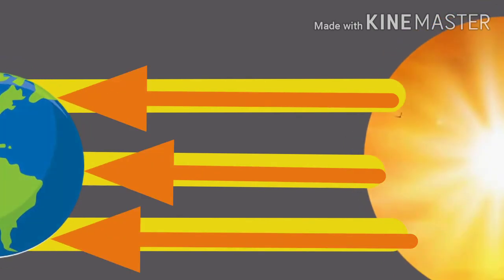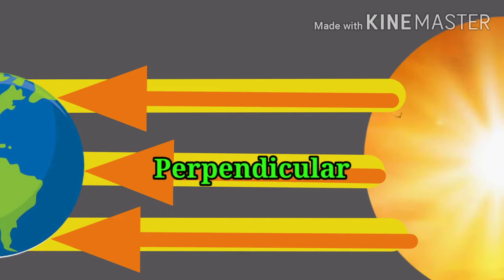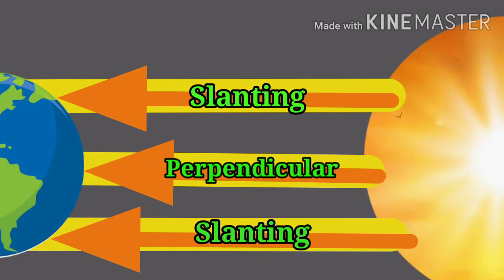Sun rays coming towards the earth travel in straight lines. However, as the earth is spherical in shape, these are not perpendicular to all parts of the earth's surface. In some parts, they are perpendicular, whereas in other parts, they are slanting. Let us see what effect it has on the earth.